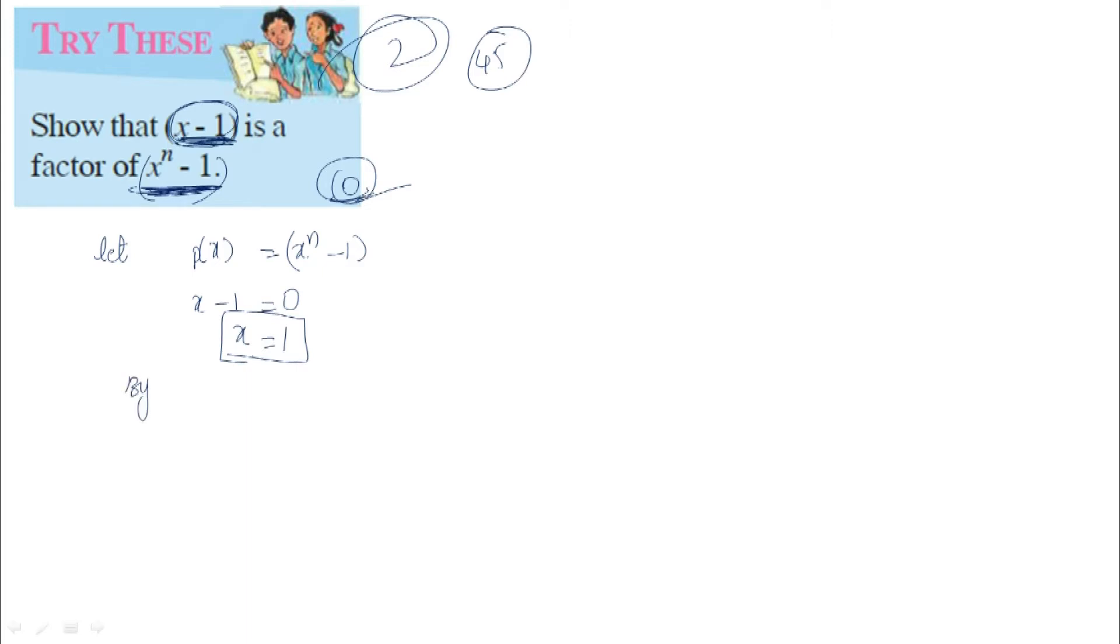By remainder theorem, replace x with 1. Here in P(x) we have x^n-1. The linear polynomial is x-1. When x-1 equals 0, x equals 1.